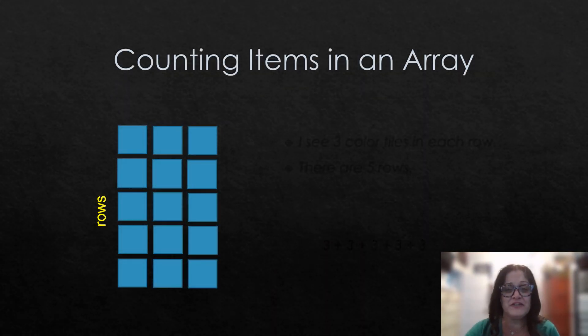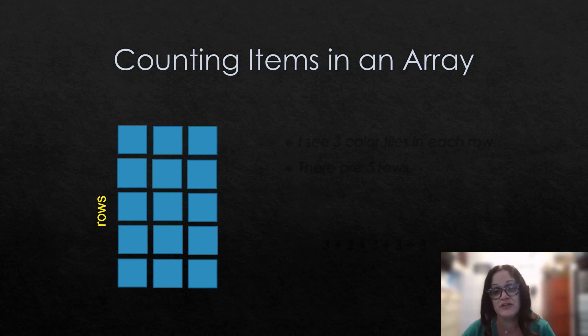In thinking about the first task we did, to support students with their understanding of a task like that, they first need to understand that an array is a set of objects arranged into rows and columns. Rows display units horizontally and columns display units vertically.